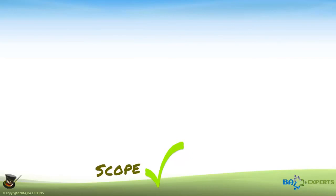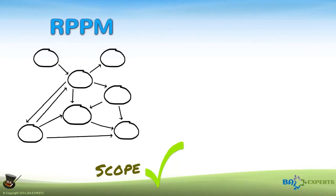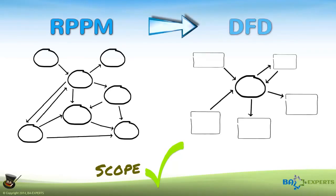Once we know the project scope, it's really easy to convert an RPPM to a context level DFD. We just need to make some minor adjustments.